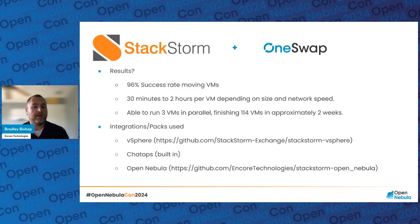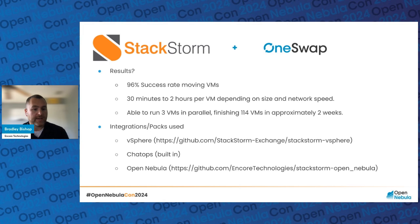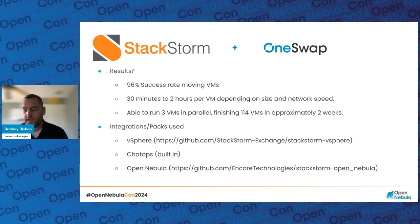How did we do? We saw a 96% success rate moving VMs. The ones that failed were outside of OneSwap — because we were actively making changes and adding hosts as we went, we took hosts from the VMware environment, imaged them, and added them to the OpenNebula environment as migrations were happening, so that we didn't have to purchase a lot of hardware. Things would occasionally get put on the wrong hypervisors during instantiation, and sometimes networking things just don't copy over — not a fault of OneSwap. Our migrations took anywhere between 30 minutes to two hours, very much depending on the size of the VM.